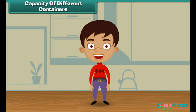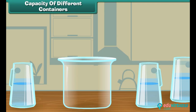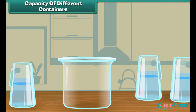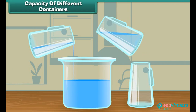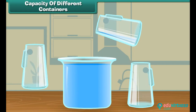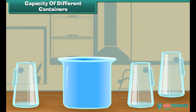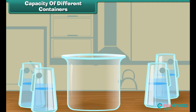We have three different vessels and a jug. We will fill water from the jug into these three vessels. Let us start with the first vessel. One, two, and three. Here we see that three jugs of water fill the first vessel.